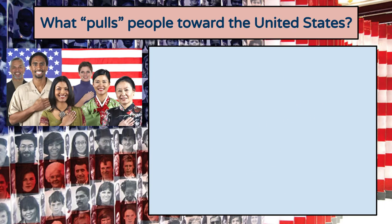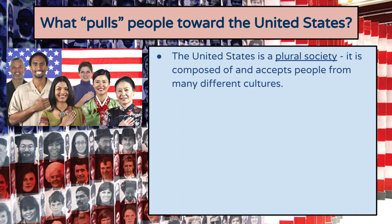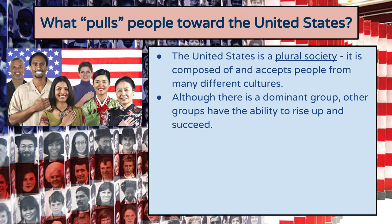Now we're going to talk about why people move to the United States of America. The United States is a plural society — as is Canada — composed of and accepting people from many different cultures. Unless you're Native American, your ancestors are from somewhere else, which makes us a plural society. Although there is a dominant group — white Europeans — other groups do have the ability to rise up and succeed. It's that whole notion of the American dream: if you work hard enough and get an education, you can do anything in the United States, and that dream motivates a lot of people to come here.